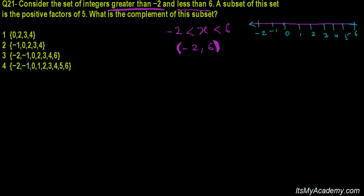So according to the question, we're not going to take -2, we're also not taking this 6, but we're taking all the integers here. So simply our set A is going to be -1, 0, 1, 2, 3, 4, and 5.